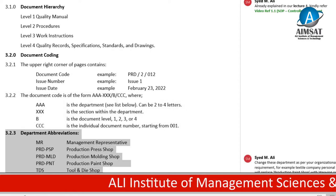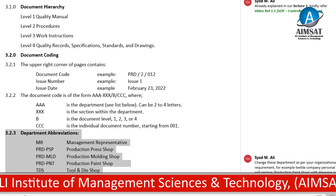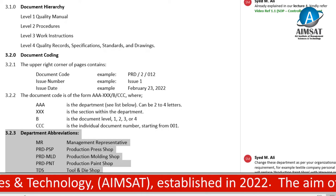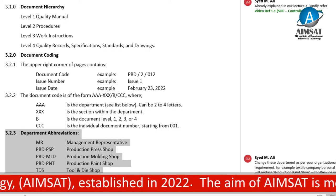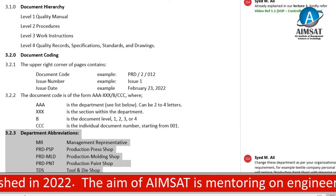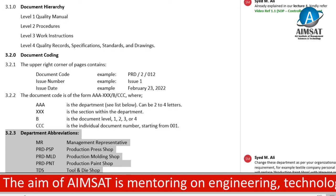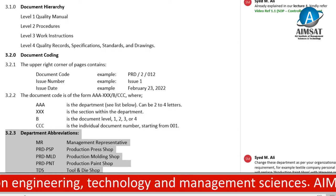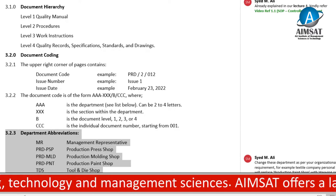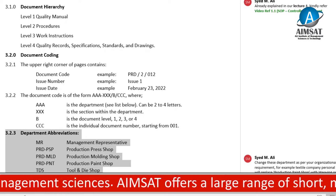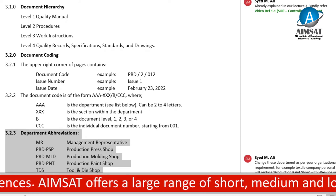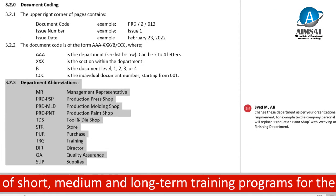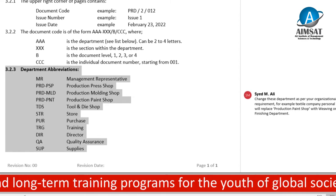Department abbreviations: MR stands for management representative. PRD-PSP stands for Production Press Shop — the press shop is a section within the production department. PRD-MLD stands for Production Moulding Shop — the moulding shop is a section within the main department of production. Similarly: STR for store, PUR for purchase, TRG for training, DIR for director, QA for quality assurance, and SUP for supplies.